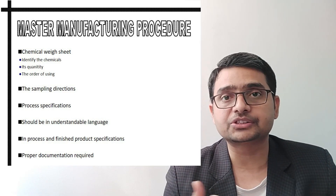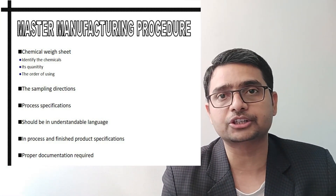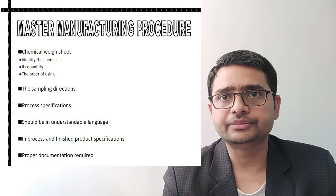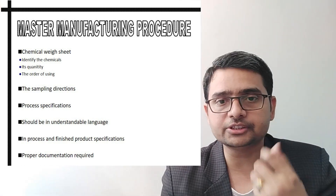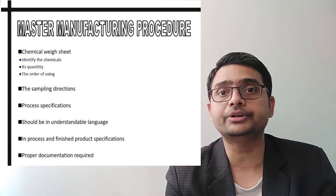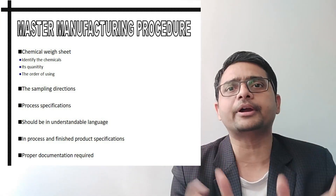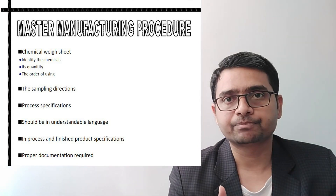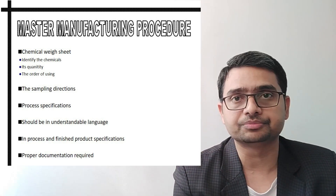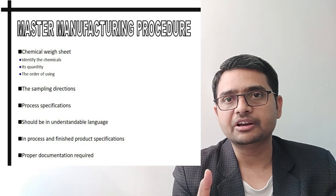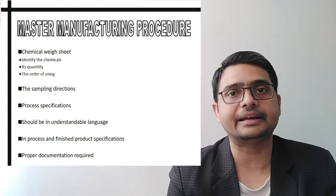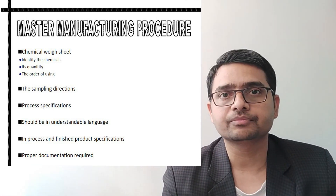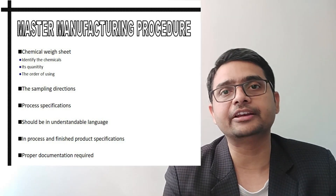The batch record directions should include different specifications such as addition rates, mixing time, mixing speed, heating, the temperature to be followed, and what the cooling rates should be. All these points should be included in the master manufacturing procedure, and ultimately all of this requires proper documentation. These points should be accommodated with specific documentation. Overall, the master manufacturing procedure becomes a master key for the reproducibility of the final product.